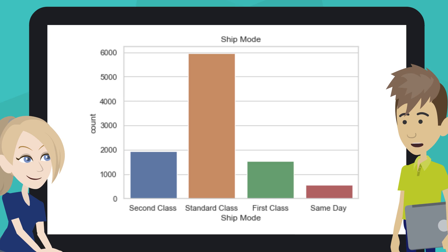That's right! What can we learn from these bar plots? By a landslide, Standard Class is the preferred method of shipment and perhaps the cheapest one too. The other modes are not popular among the customers.